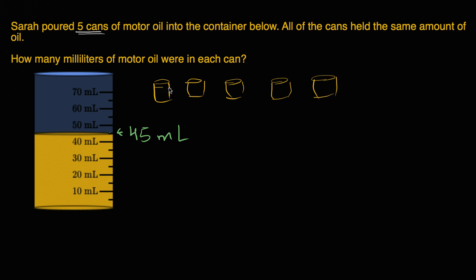They each had a certain amount of oil in them. And when she put them all in, so let's say they each have a question mark of oil in them. So she had five cans and they each had a question mark amount, say question mark milliliters of oil in it.